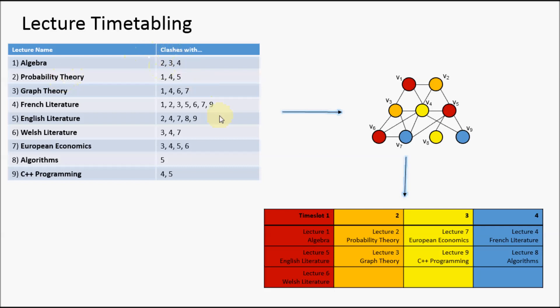With these clashes, we can define this as a graph. This is what we call an adjacency list, and this is its graphical representation.